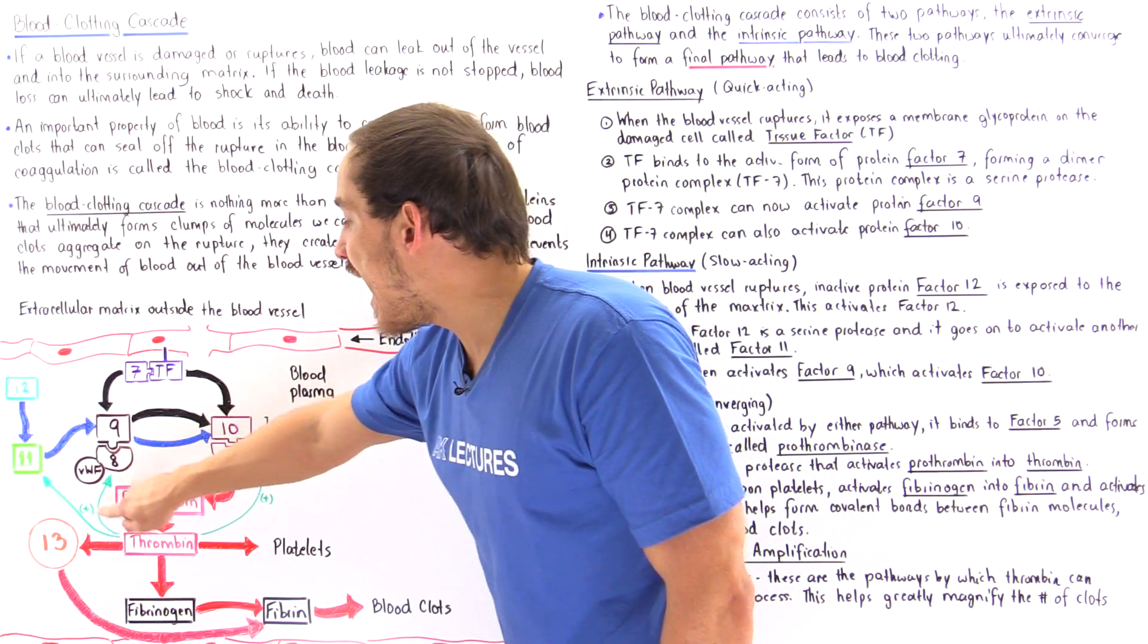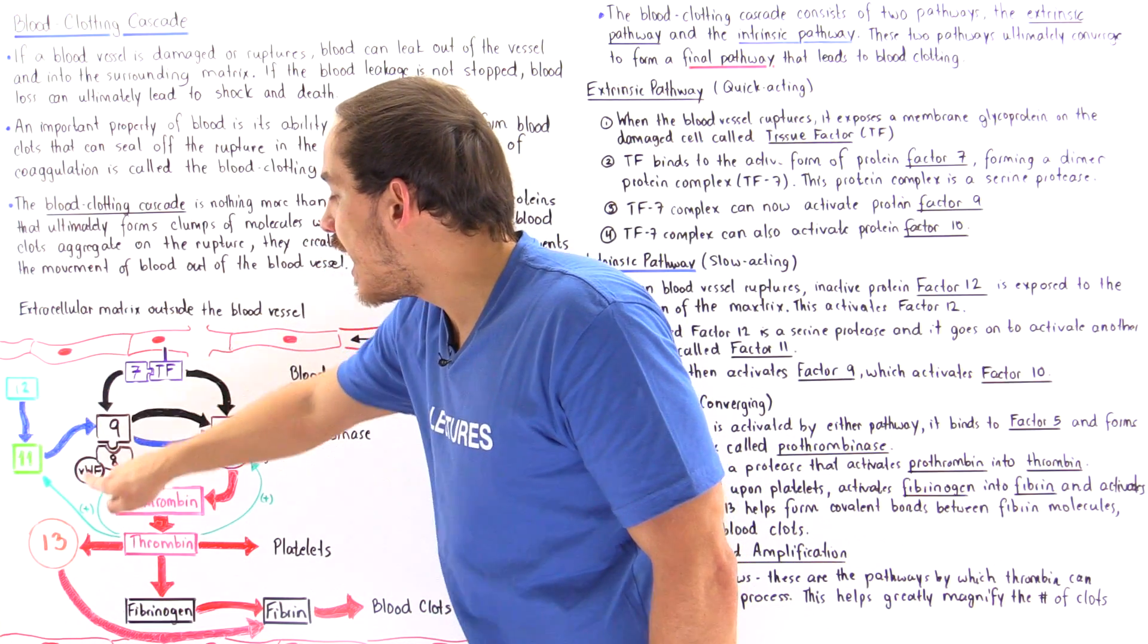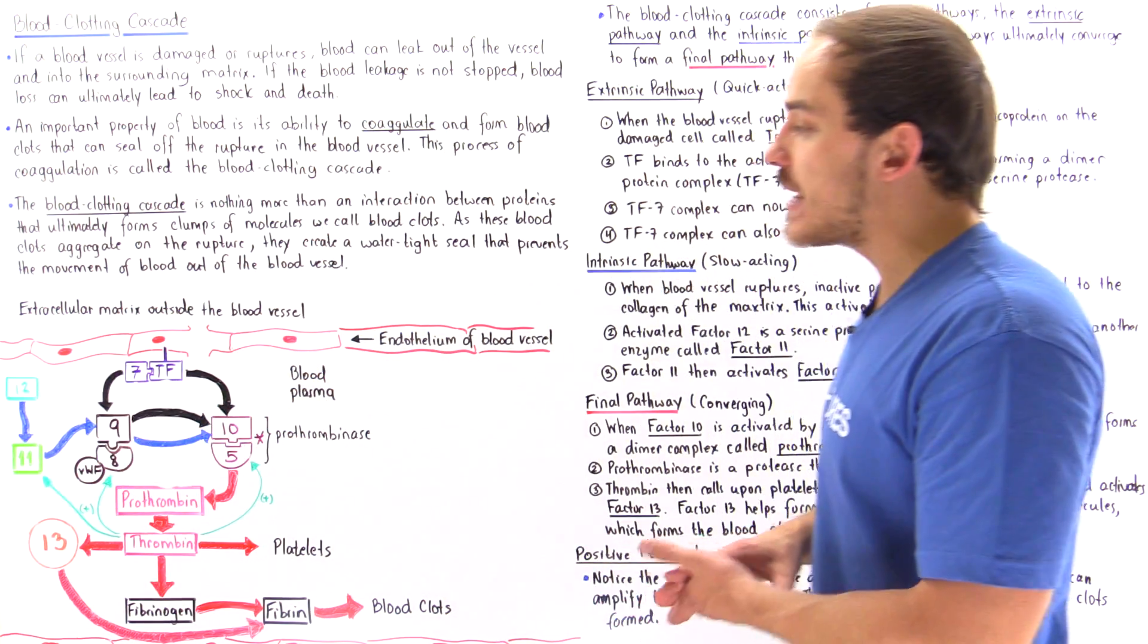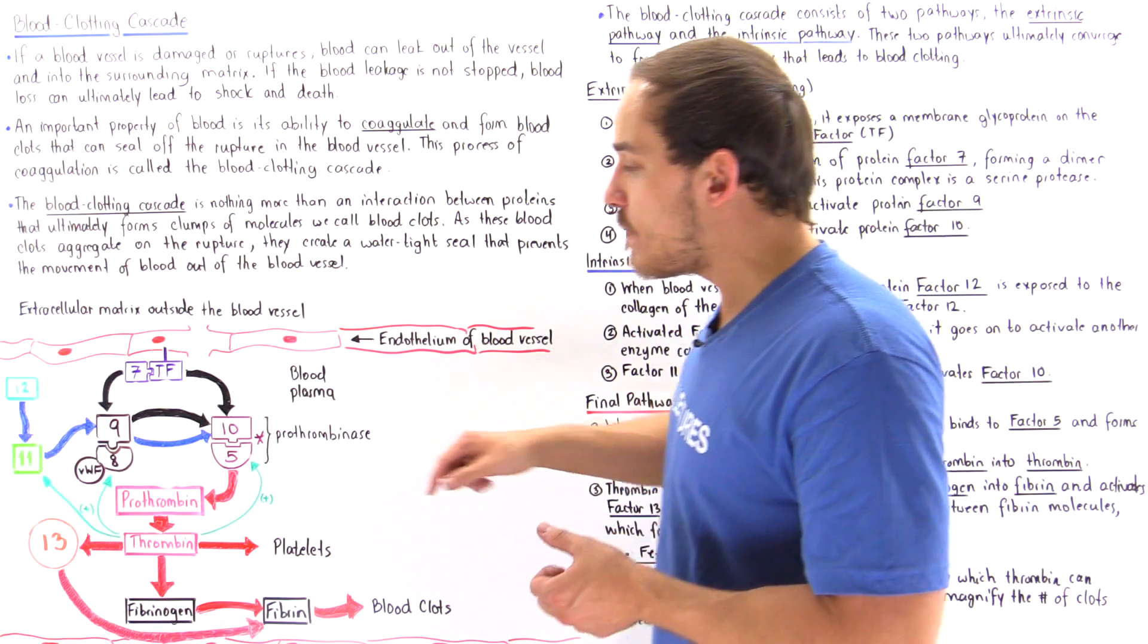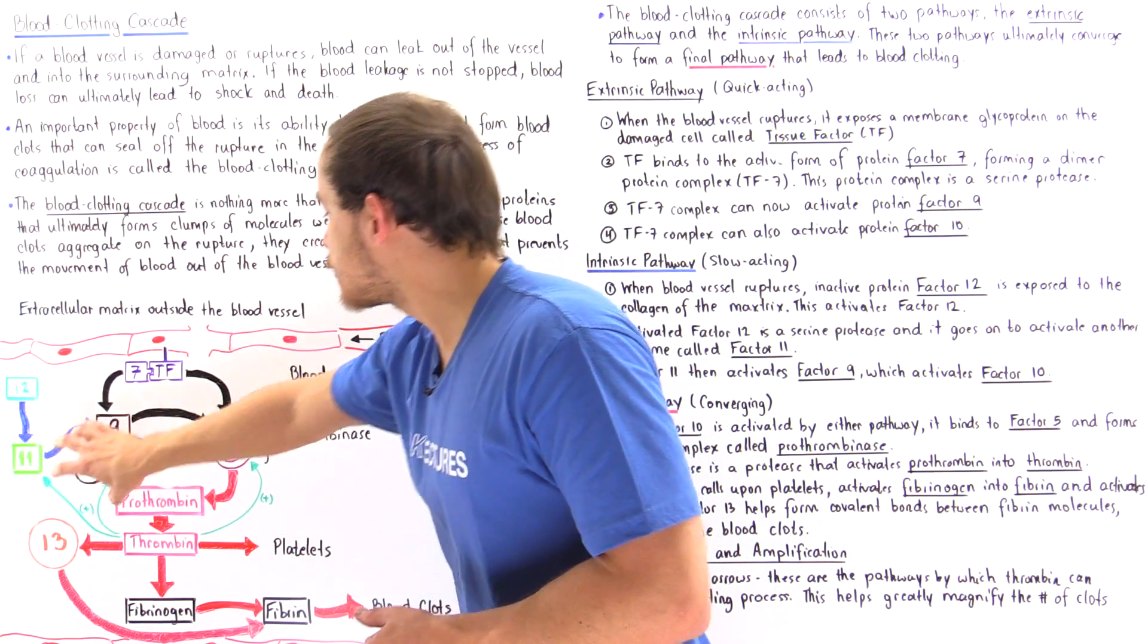With factor 10, it activates factor 8 to combine with factor 9, as well as VWF, which stands for von Willebrand factor. This is another protein that is needed to stabilize factor 8, and it activates the complex that